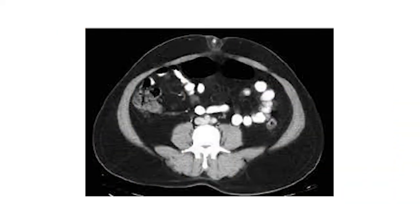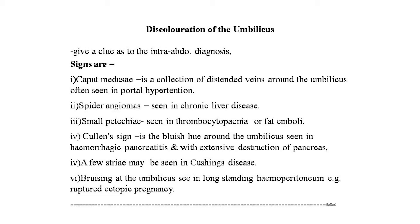Discoloration of the umbilicus may provide clues to intra-abdominal diagnosis. Signs include: caput medusae — distended veins around the umbilicus seen in portal hypertension; spider angiomas in chronic liver disease; small petechiae in thrombocytopenic states or fat emboli; Cullen's sign — bluish hue around the umbilicus seen in hemorrhagic pancreatitis with extensive pancreatic destruction; striae seen in Cushing's disease; and bruising at the umbilicus seen in long-standing hemoperitoneum such as ruptured ectopic pregnancy. Images are shown on screen.